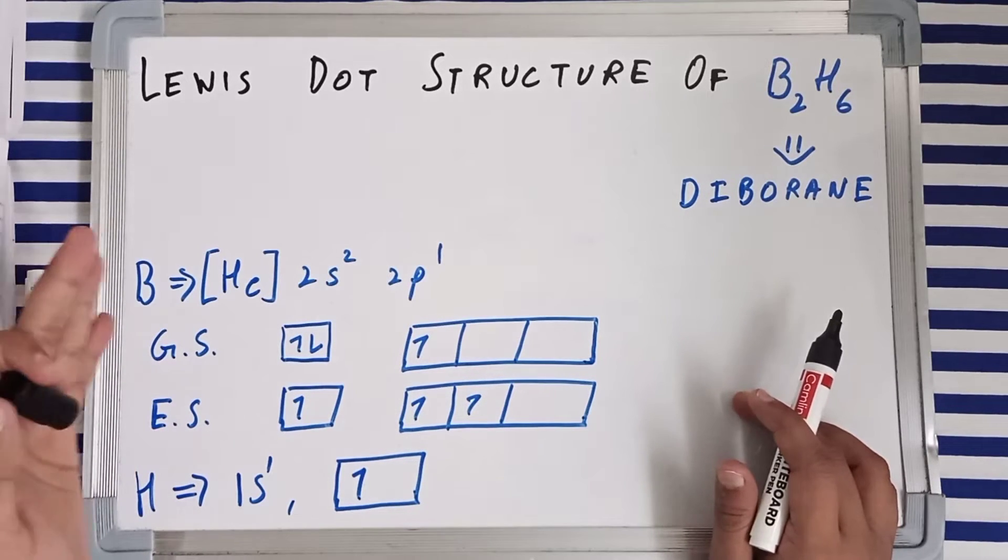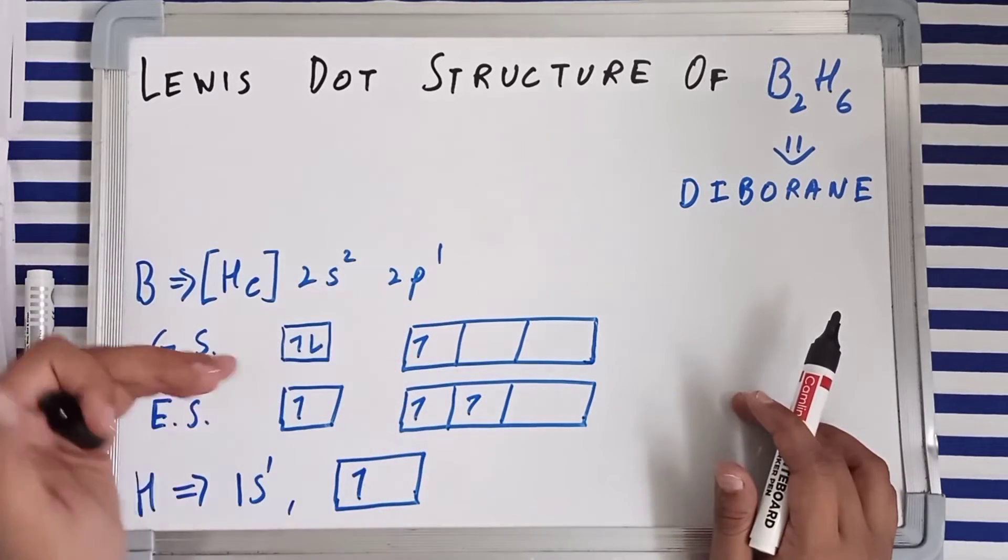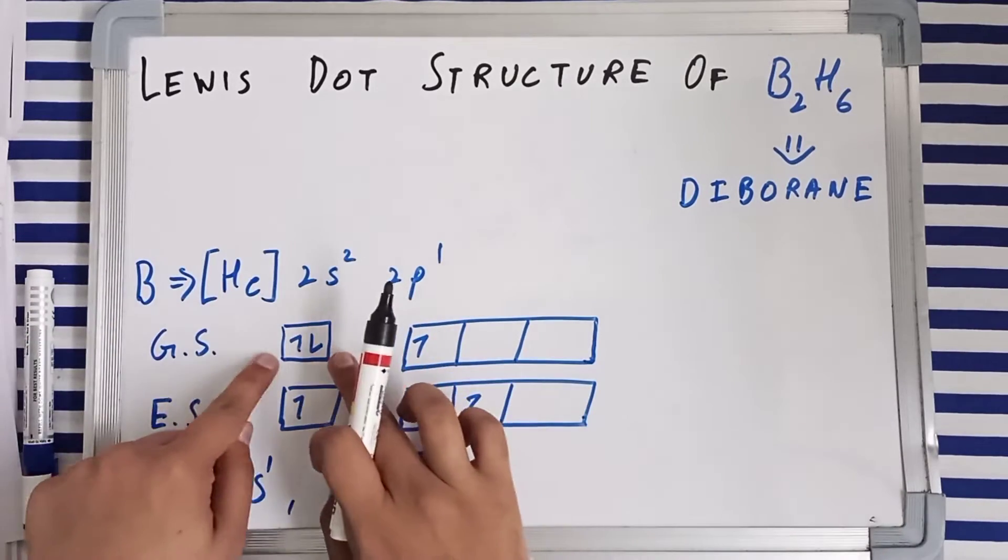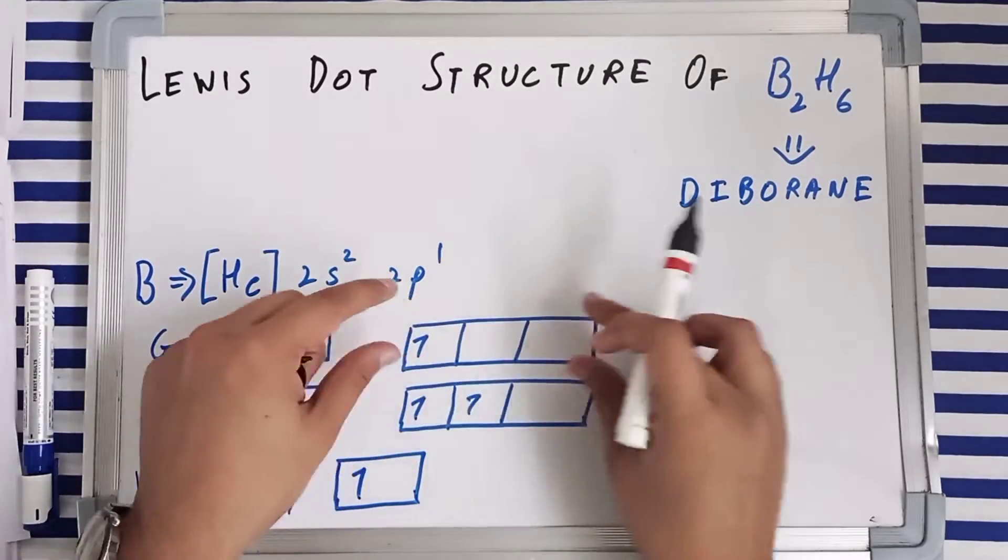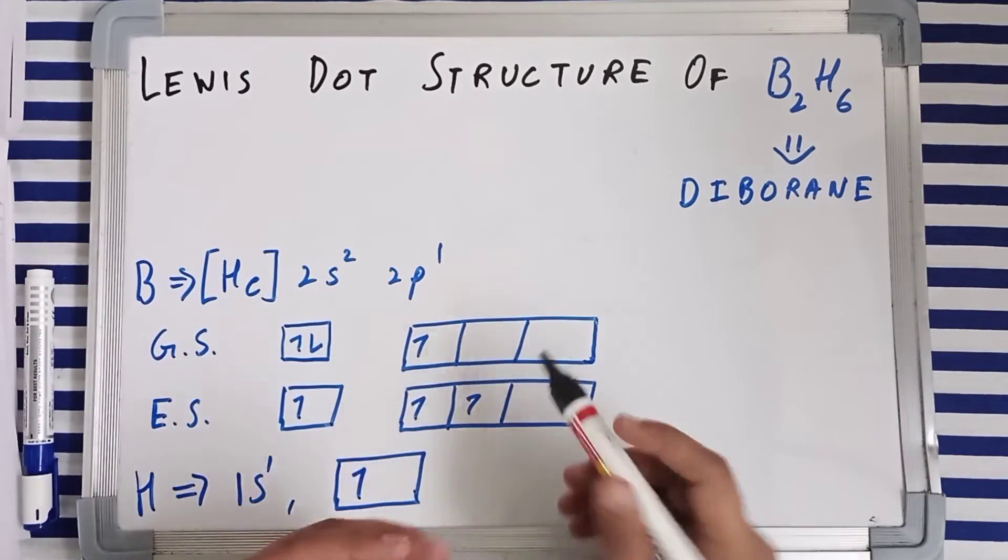The electronic configuration of boron is 2s² 2p¹. The orbital diagrams are like this: 2s has two electrons and 2p has a single electron, but 2p has three orbitals. These boxes represent orbitals.